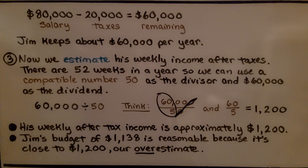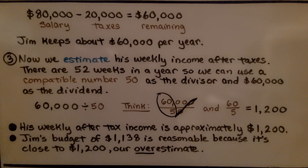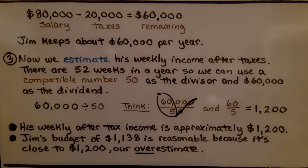His weekly after-tax income is approximately $1,200. Jim's budget of $1,138 is reasonable because it's close to $1,200, our overestimate. Because we got $1,200, it's an overestimate of what he's actually making each week.